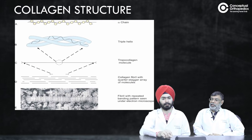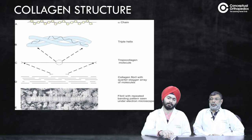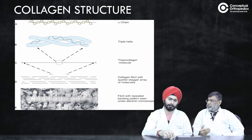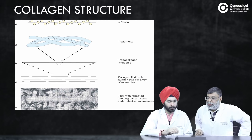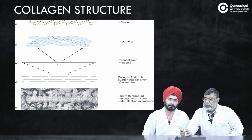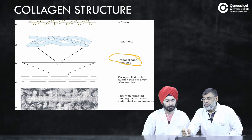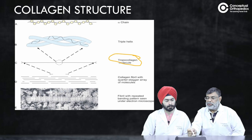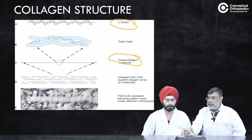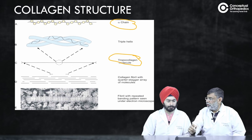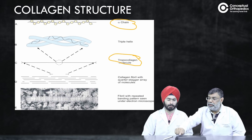Under electron microscope, collagen appears as fibril-type structures. At the molecular level, collagen exists as tropocollagen units. Tropocollagen consists of a triple helix of alpha chains — three alpha chains wound in a helix. You don't need the detail of which direction it winds; as long as you understand that the fibrils consist of tropocollagen, which consists of a triple helix of alpha chains, that is sufficient for understanding collagen microstructure.